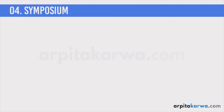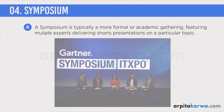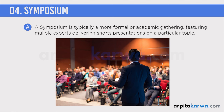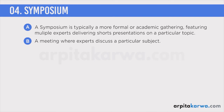Finally, we have the symposium. A symposium is typically a more formal or academic gathering featuring multiple experts delivering short presentations on a particular topic. In a conference, there is a large gathering where 10 or 15 people on a panel share their views while the rest listen, ask questions, and discuss. In a symposium, however, you have a very limited group of people attending, and it features only experts who come to discuss a particular subject.